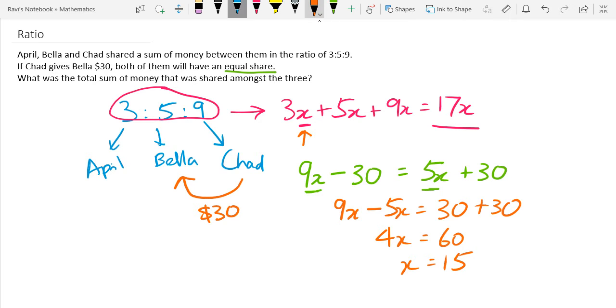So to get the final answer, we say that since x equals to 15, we have a total of 17x parts. Which means 17 times 15, which equals to $255. So that is the total sum of money that was shared amongst the three.